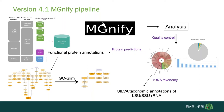We map the rRNA to the SILVA database to give taxonomic annotations. Additionally, with the raw reads we perform protein predictions using Prodigal and FragGeneScan, and then use InterPro to characterize these. InterPro is a resource of combined predictive models or signatures, some calculated using profile hidden Markov models, taken from many member databases and put into a single searchable resource. We use five of those member databases within MGnify.